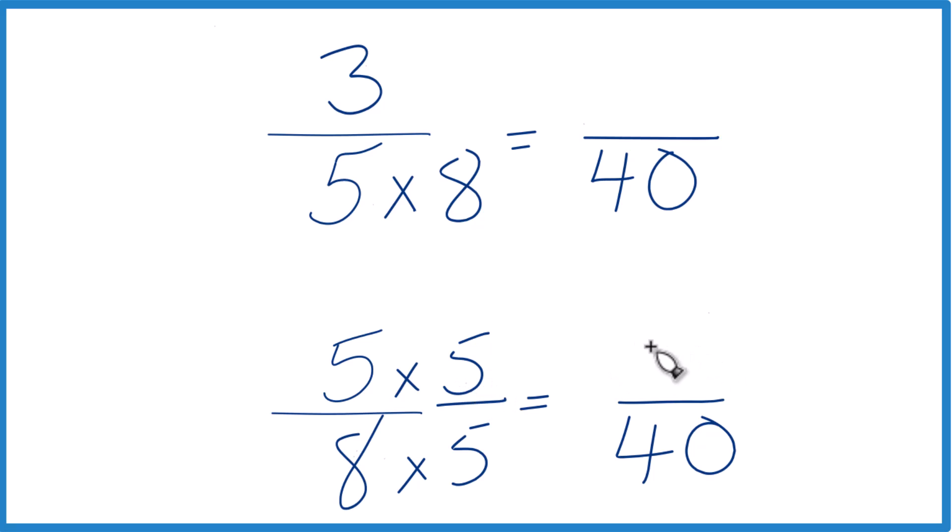5 times 5, that's 25. 5 and 25 fortieths, that's equivalent to 5 eighths. They have the same value.